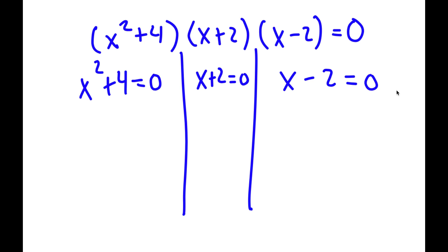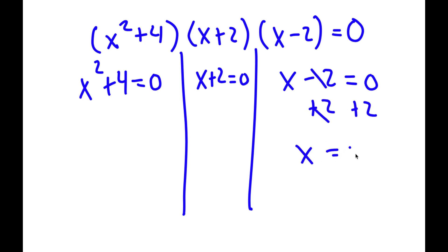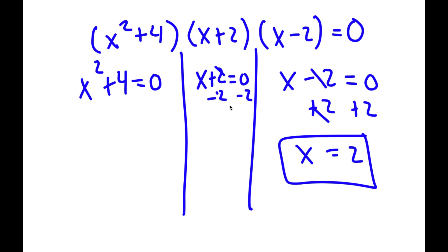Let's first start with the easier equations, which are x plus 2 equals 0 and x minus 2 equals 0. If x minus 2 equals 0, all I have to do is add 2 on both sides, and I get x is equal to 2. If x plus 2 equals 0, all I have to do is subtract 2 on both sides, and I get x is equal to negative 2. So I have two solutions already.